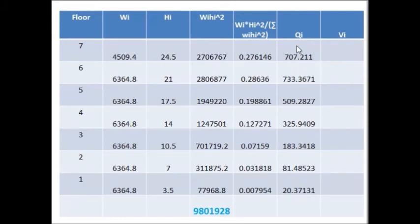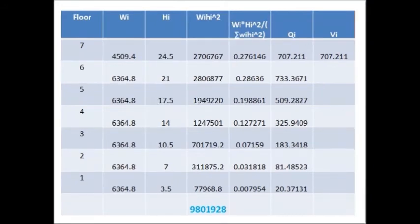And for the Qi, we have the formula and fill that data. Fill that particular table. Now, the last is Vi. Vi is the story shear. Till now, Qi, we determined the lateral force distribution. Now we have to determine story shear. So what is story shear? It is the cumulative summation of lateral force.